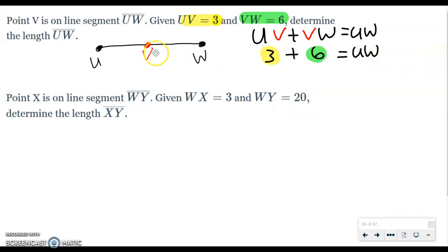Now I don't want you to think every time you see this that it's really easy, just do 3 plus 6 every time. But on this one, we are going to do 3 plus 6 and you get 9. So UW, which is what we were looking for, is equal to 9.